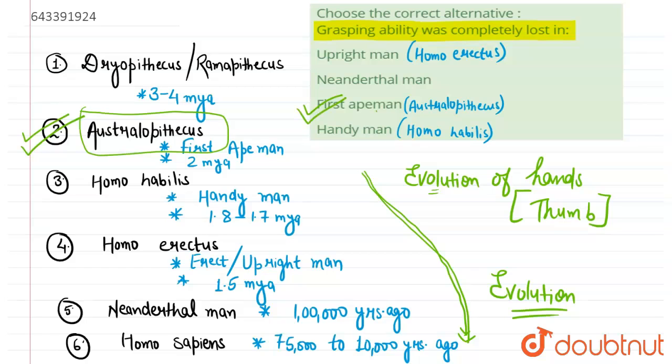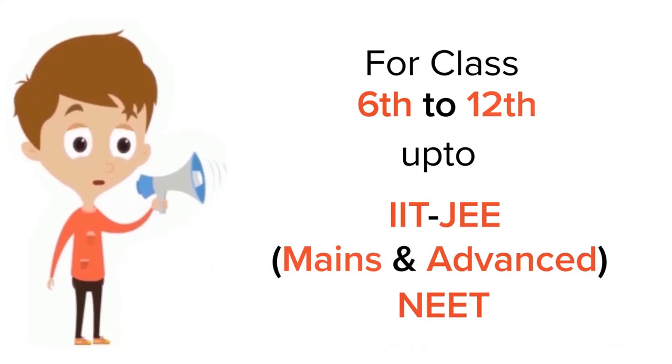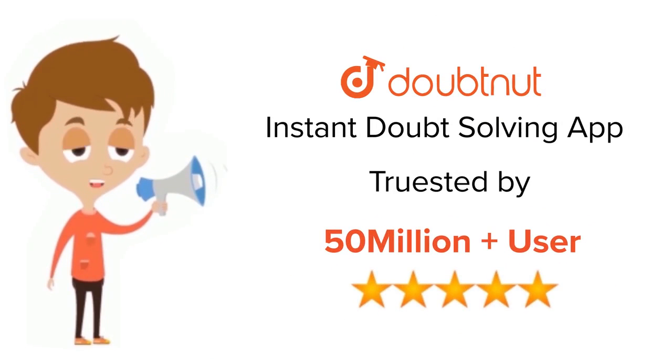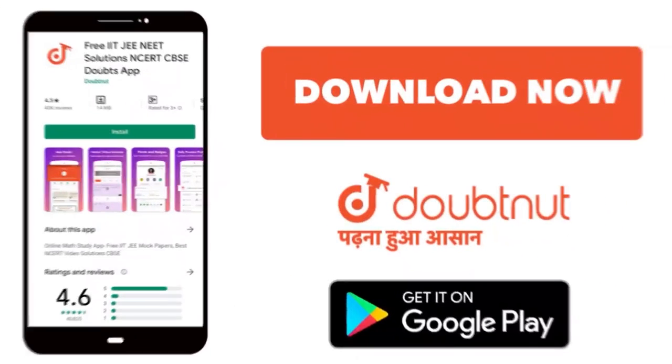And then there came the Homo habilis which are called the handyman, and these handyman used different kinds of tools and they were created with the help of their special hands which had the grasping power. So I hope I was able to clear this doubt. Thank you so much. For class 6-12, IIT, and NEET level, trusted by more than five crore students, download Doubtnut today.